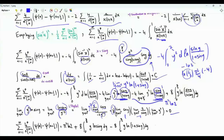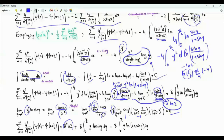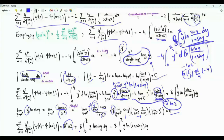So we have pi² ln 2, then 4 times the integral from 0 to pi over 2 of ln(sine y / (1+sine y)) times 2y dy, giving 8 times an integral with y. This splits into 8 times the integral from 0 to pi/2 of y ln(sine y) dy minus 8 times the integral from 0 to pi/2 of y ln(1 plus sine y) dy.